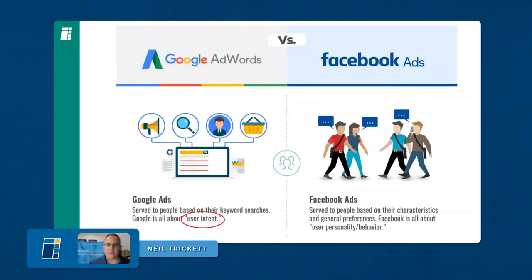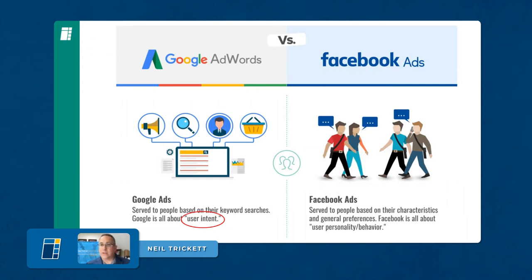Sometimes people say 'I'm doing Facebook Ads so I don't need Google Ads' — that's not the right train of thought; they're different. Facebook Ads serve to people based on their characteristics and general preferences — it's all about a user's personality or behavior. With Facebook advertising focused on generating consults or leads, you might get some signups but they may not show up or be very good quality leads. Facebook is more of a public relations action and a broader reach tool — you should be doing it in addition to Google Ads, not instead of.